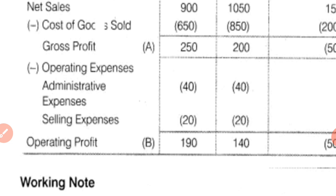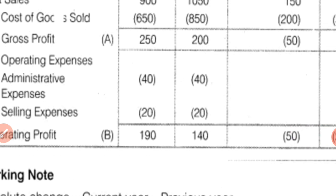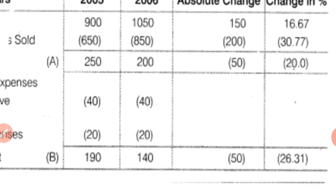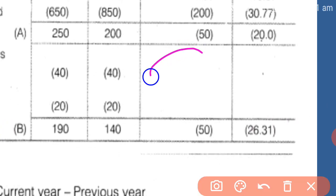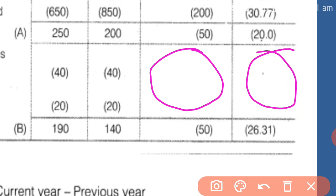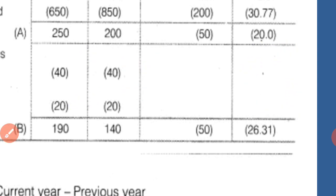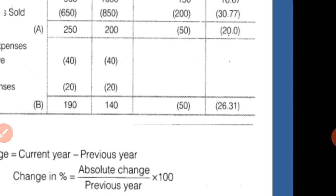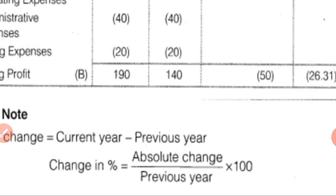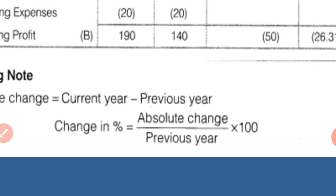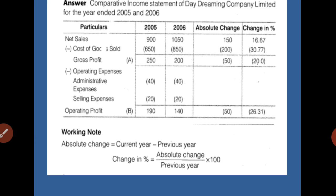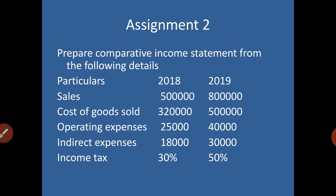For administration expense and selling expense, the amounts for both years are the same — 40/40 and 20/20 — so there is no absolute change and no percentage change for these two items. To summarize: absolute change equals current year minus previous year; percentage change equals absolute change divided by previous year, multiplied by 100.